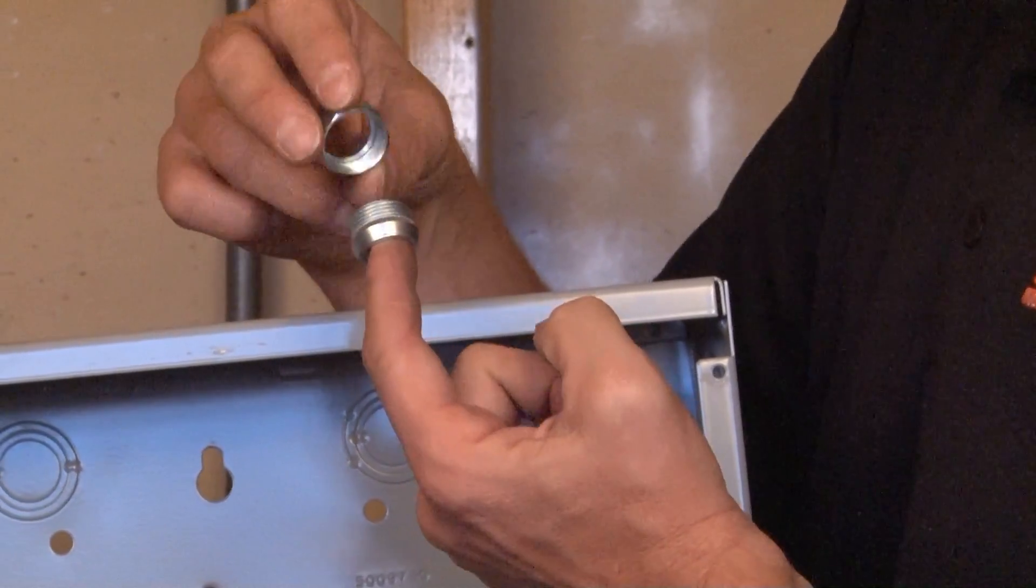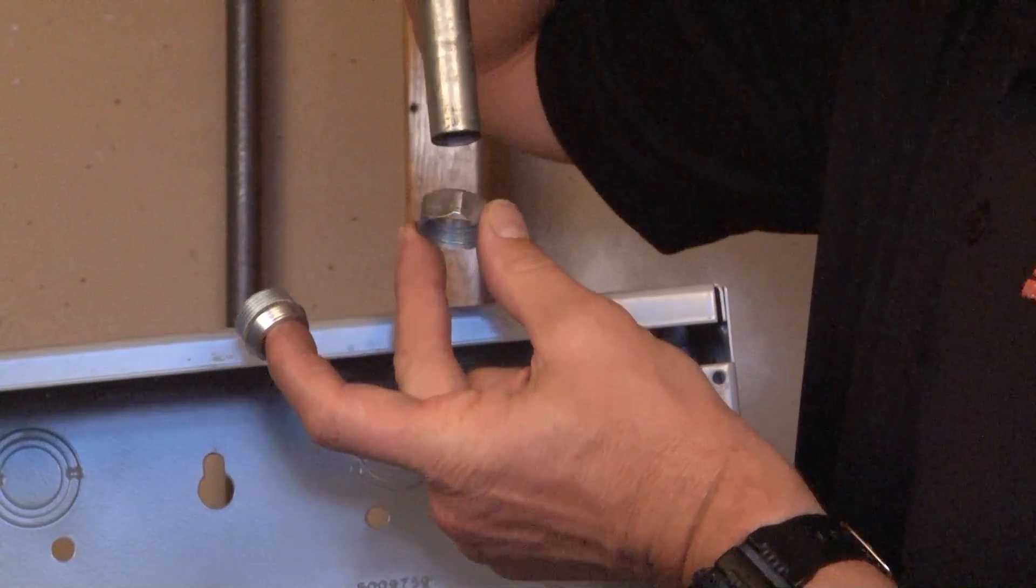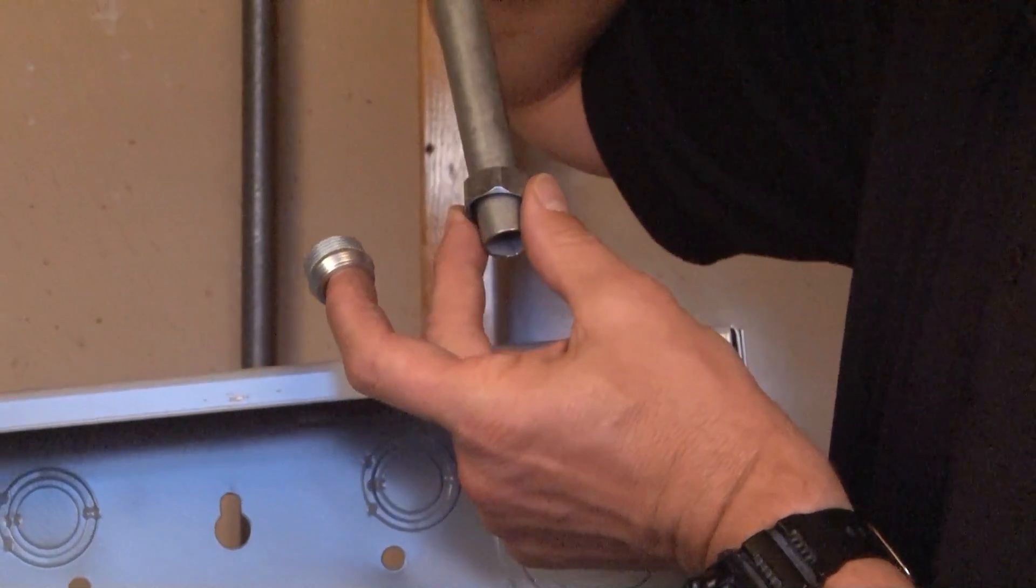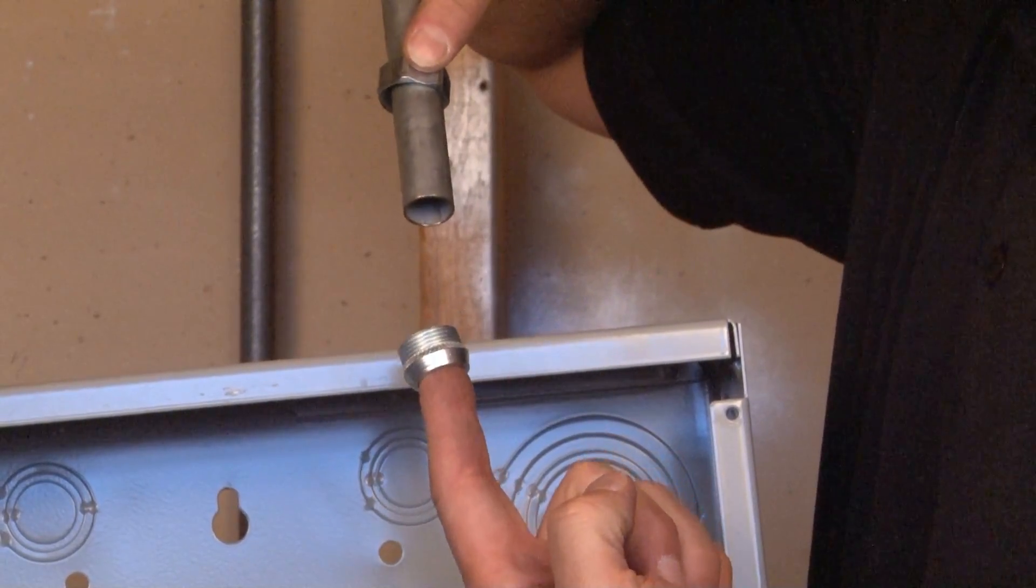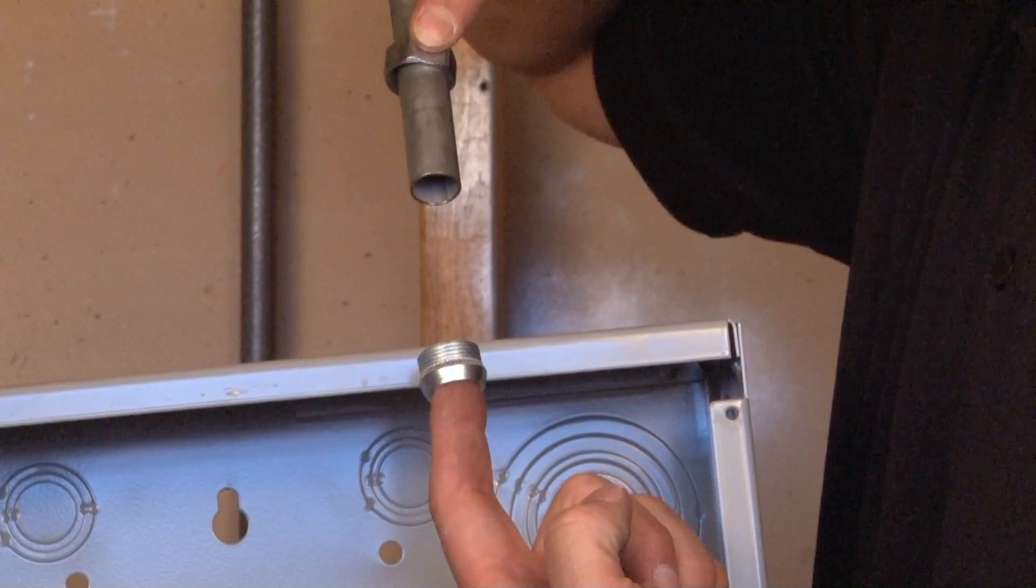You simply remove the gland ring and slide that on the open end of the conduit that you want to install in the box. The second piece actually acts as a lock nut and connector all in one.